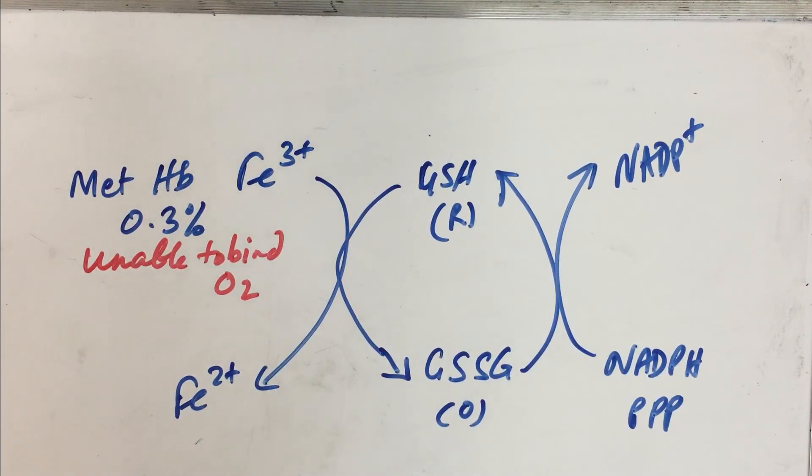Not only this, there are several other enzymes where the active site involves sulfhydryl groups. All those enzymes are kept at a reducing environment by the help of pentose phosphate pathway. You see that pentose phosphate pathway has got a huge clinical significance.